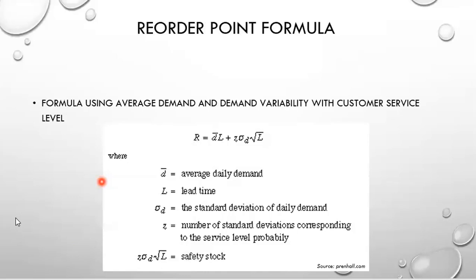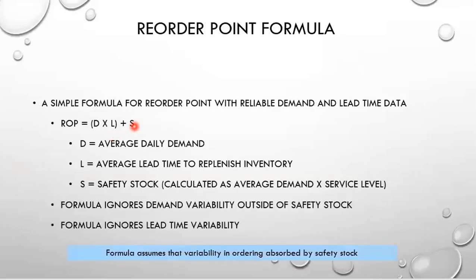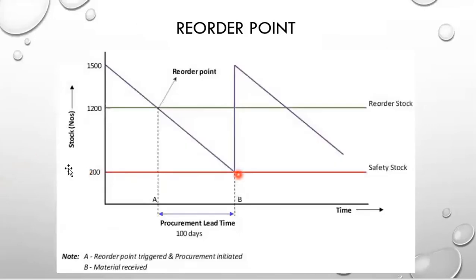For the rule of thumb, demand variability needs to be shown somewhere in your reorder point. For the book, all you really need to worry about is the basic D-times-L formula, and just remember that your demand variability is absorbed by your safety stock — which goes up or down based on the Z-score as it relates to your demand variability.